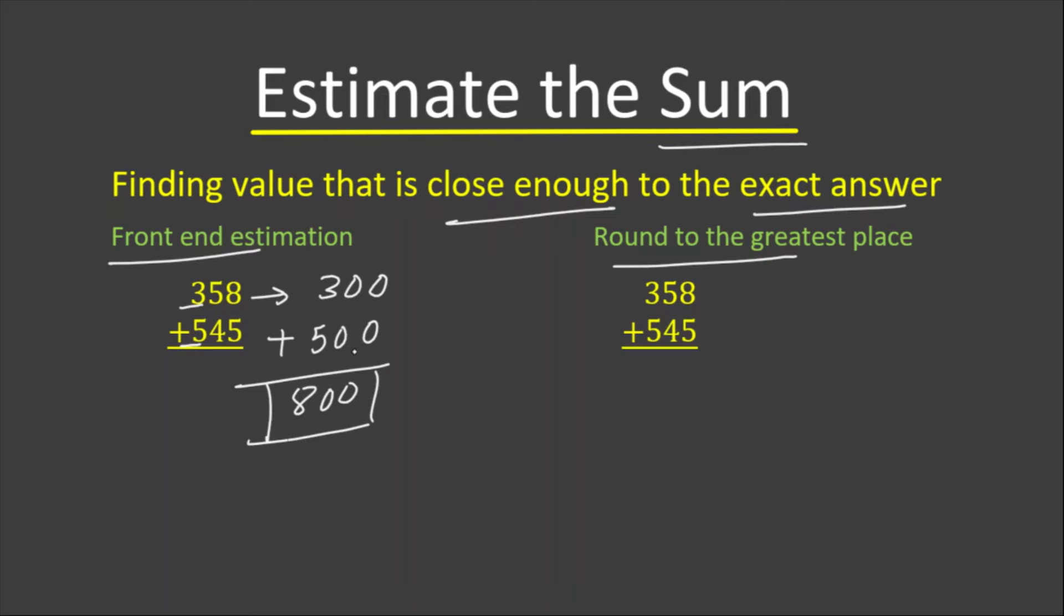We now move to the second strategy. The second strategy says round to the greatest place. So the greatest place is hundreds. The greatest place is hundreds in both numbers, so we round using the rounding strategy.